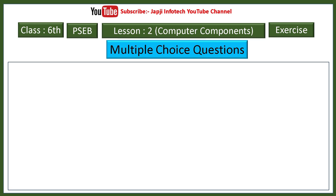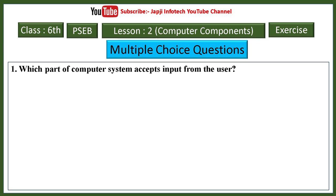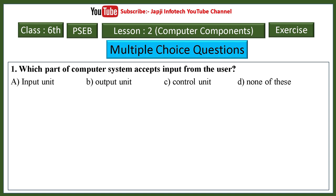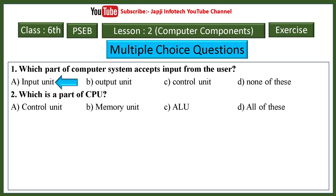Now we learn multiple choice questions of lesson number two. First question: which part of a computer system accepts input from the user? Options: input unit, output unit, control unit, none of these. Right answer: input unit. Second: which is a part of CPU? Options: control unit, memory unit, ALU, all of these. Right answer: all of these is a part of CPU.